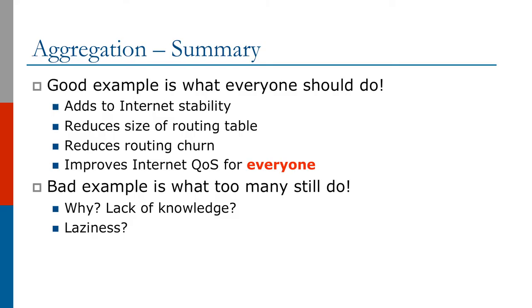In conclusion, the good example is what everybody should do as it adds to internet stability as well as reduces the size of the routing table. This reduces routing churn, thereby improving internet QoS for everyone. The bad example is what many ISPs do due to either lack of knowledge or laziness. This must be avoided.